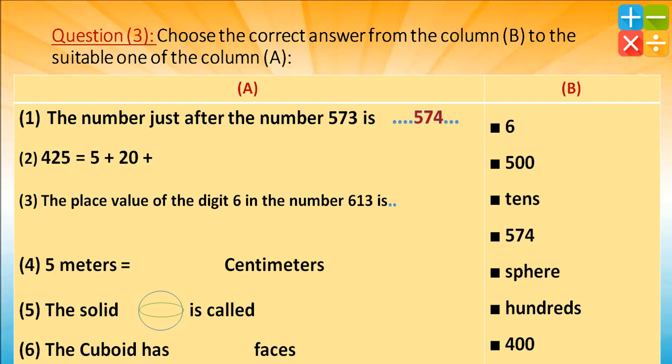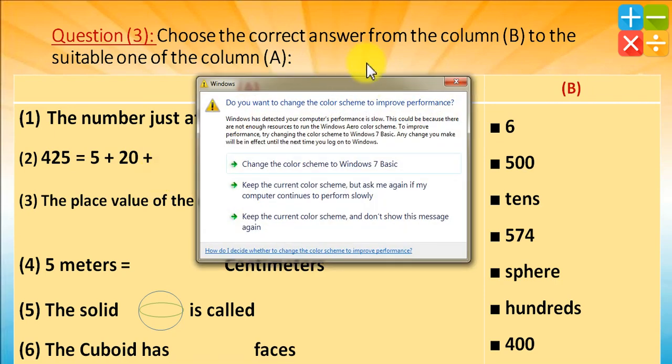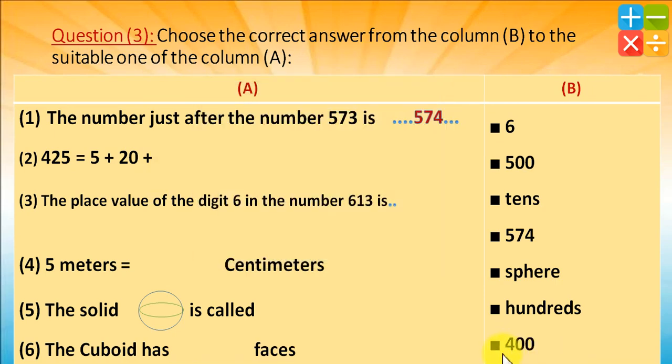425 equals 5 plus 20 plus 400. Here we have 400.